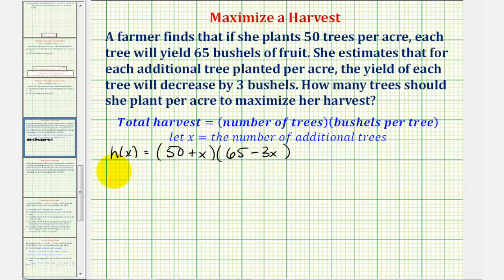Let's go ahead and multiply this out. h(x) is equal to 50 times 65, that's 3,250, and then minus 50 times 3x, that's minus 150x, plus 65x minus 3x squared.